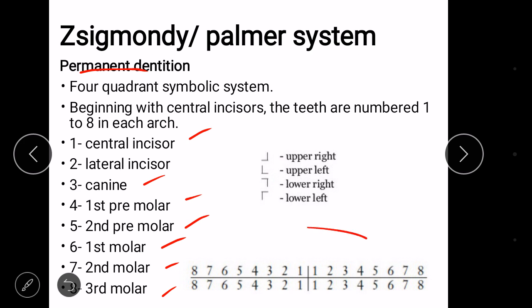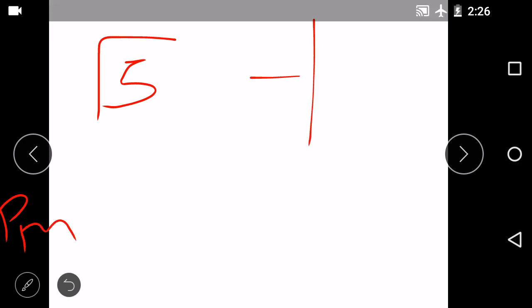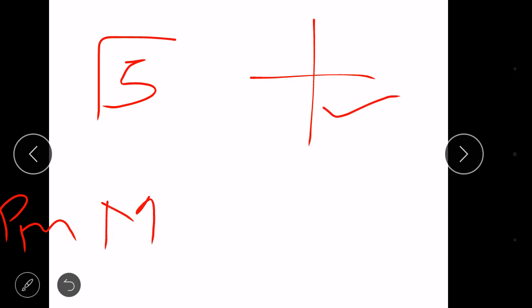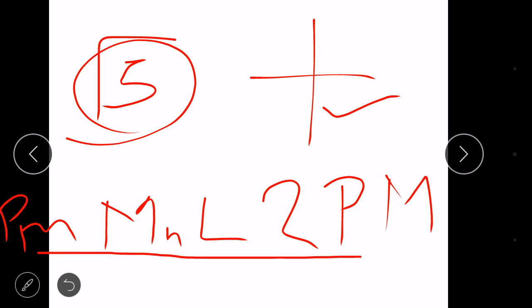Again, they are represented in this form. Let's take an example. Let's write it to be 5. Now we know the numbers are used for permanent dentition. And this quadrant represents our mandibular left side. And 5 stands for second premolar. So this symbol denotes the tooth: permanent mandibular left second premolar.